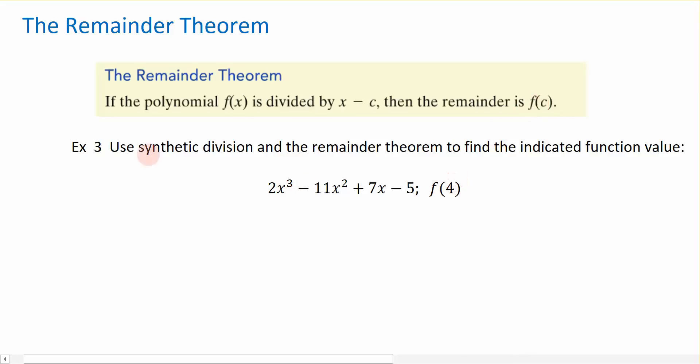We are going to use synthetic division and this remainder theorem to evaluate my function at 4. So here's the function that we're looking at, and I want to know what is f(4). I hope that you recognize that if I'm evaluating a function, typically I could replace x with 4, find out, simplify that, and that's evaluating the function at 4. But this is just another way for us to be able to do it.